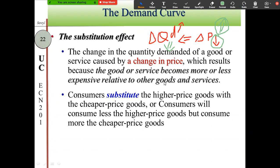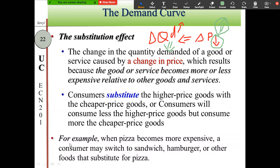Another example from the textbook: pizza and burger are not 100% the same but have a similar taste or are in the same food group. When pizza becomes more expensive, consumers may switch to sandwich, hamburger, or other substitutes. They buy less pizza and more of the substitute foods.